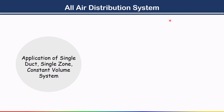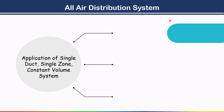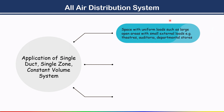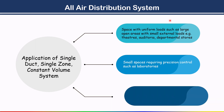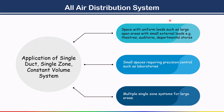Applications of the single duct single zone constant volume system include spaces with uniform loads such as large open areas with small external loads — for example, theaters, auditoriums, and departmental stores. It is also suitable for small spaces requiring precision control such as laboratories. For large areas, multiple single zone systems may be used together.